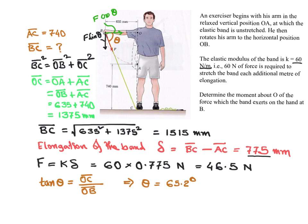For the F sine theta component, we will get the moment about point O. There will be no moment due to F cosine theta because that force passes through point O, so the lever arm would be zero.